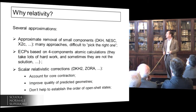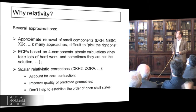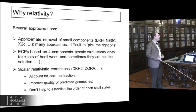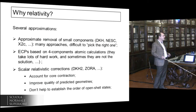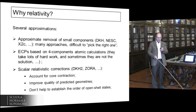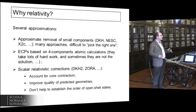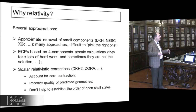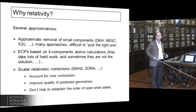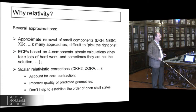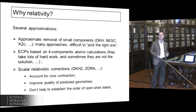There are several approximations to do relativistic calculations: approximate removal of small components, Douglas–Kroll normalized elimination of small components, Jürgen Gauss's X2C method — the dust is not settled yet. We are not experts in this field; we are trying to get into it, so it's not clear to us which, if any, of these approximations is emerging as preferred.